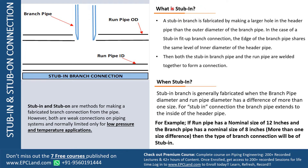A stub-in branch is fabricated by making a large hole in a header pipe. We are planning to take a branch from this header line, so first we take a large hole out of this header. The opening in the header is always more than the branch connection diameter because we are going to insert this branch inside this opening. In a stub-in fit-up branch connection, the edge of the branch pipe shares the same level as the inner diameter of the header. Then both the stub-in branch pipe and the run pipe are welded together to form a connection.